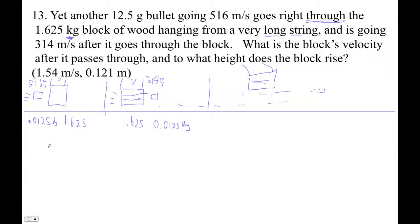Okay, let's figure out how fast this guy's going. So we'll go 0.0125 times 516 plus 0, this guy's not moving to begin with, equals 1.625 V. Because the bullet does not stick in the block, it goes right through the block. And then this bullet is going 0.0125, it's going 314. So let's figure that out.